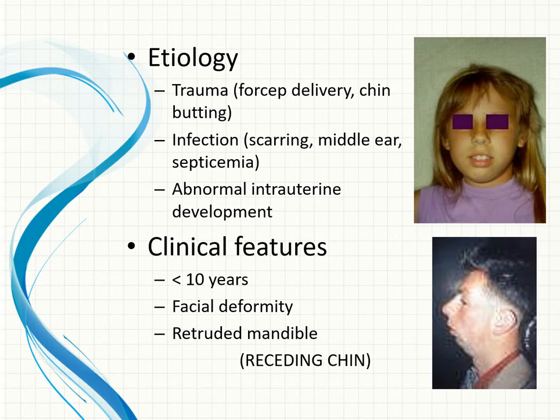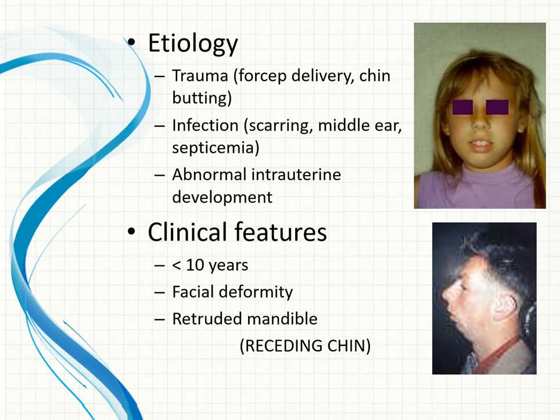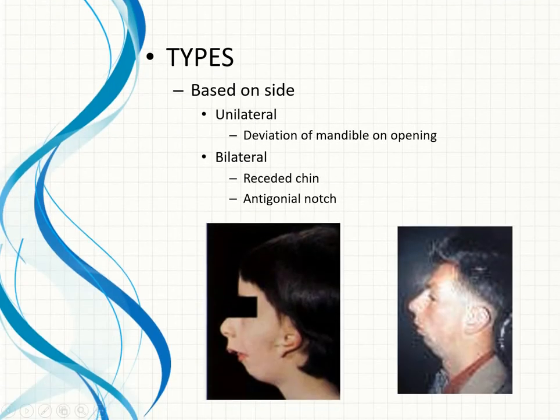Ankylosis is usually seen in children less than 10 years of age and presents with facial deformity with a very receding chin. Based on the side of involvement, it may be unilateral or bilateral. To compensate for limited mouth opening, there will be a prominent antegonial notch.